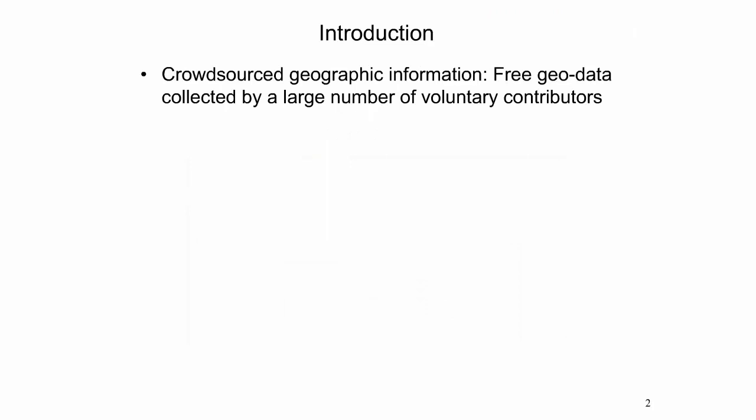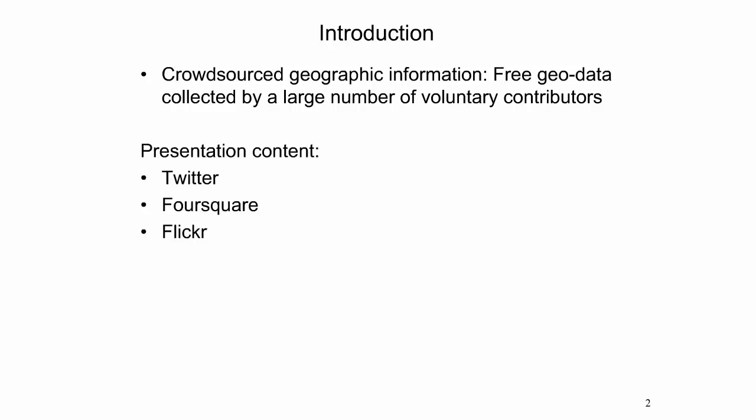Crowdsourced geographic information is user-generated content contributed by a large number of volunteers. The collected geo datasets are a free alternative to commercial datasets and governmental agency data. This presentation focuses on social media, explaining the type of user-generated geographic information that can be extracted from Twitter, Foursquare, and Flickr social media platforms in different topic areas.